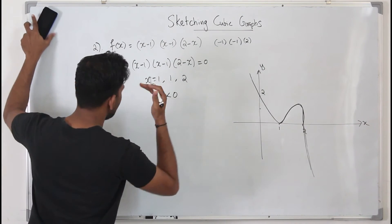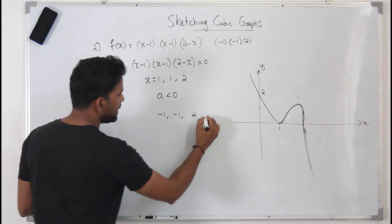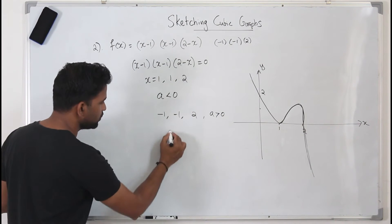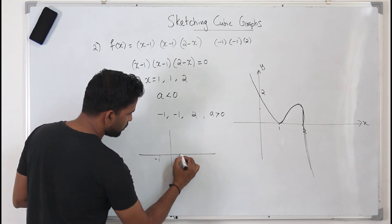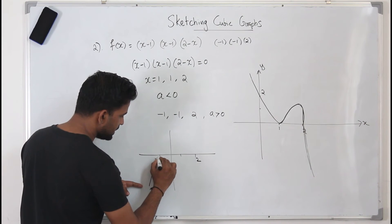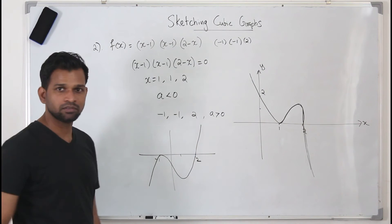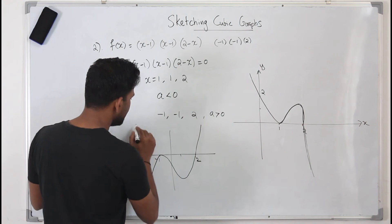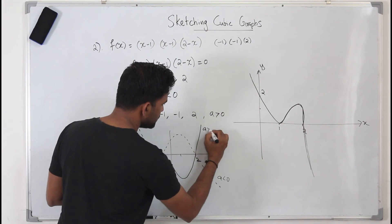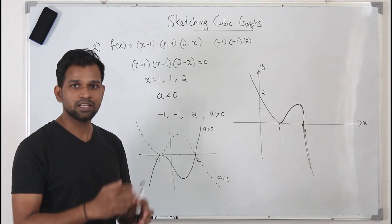To generalize: if you have two equal values — say −1, −1, and 2 — and a is greater than zero, the curve touches the x-axis at x = −1 and passes through at x = 2, sweeping upward. If a is less than zero, the graph is the inverted version. Always pay attention to the coefficient of x³ before sketching the cubic graph, just as you would with the coefficient of x² for a quadratic.